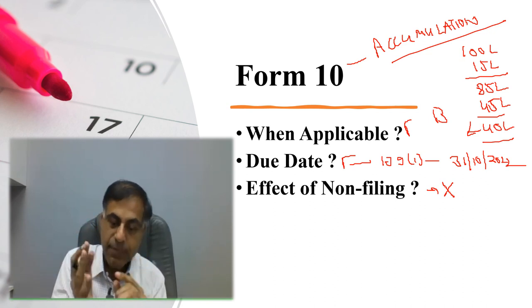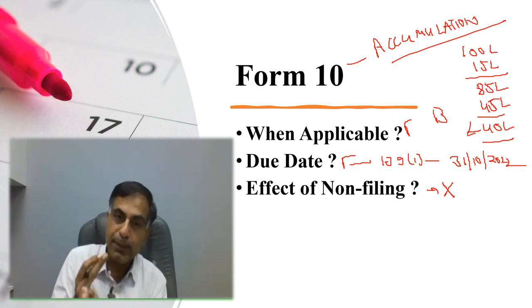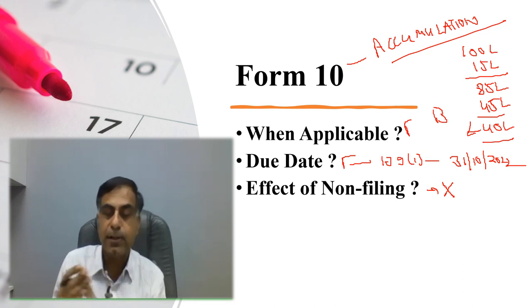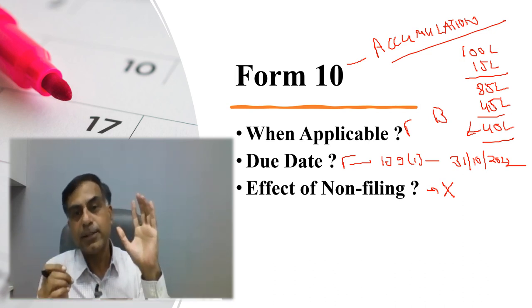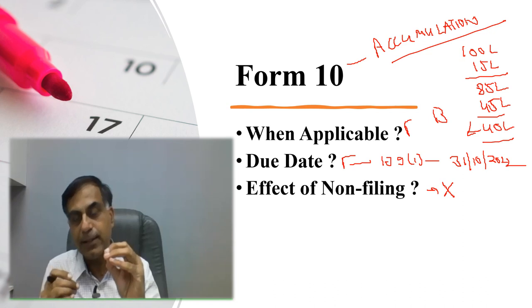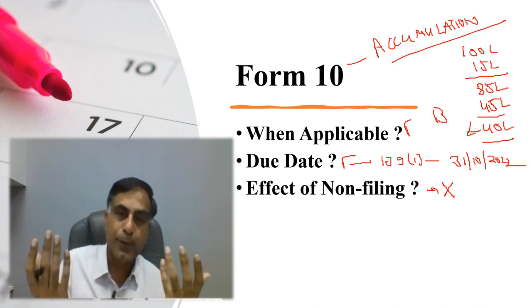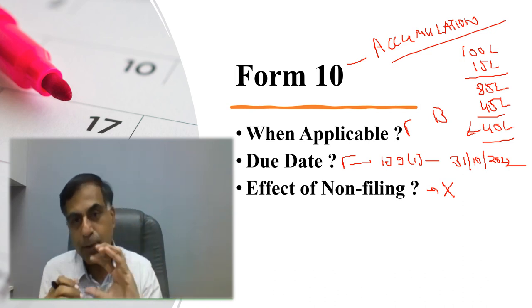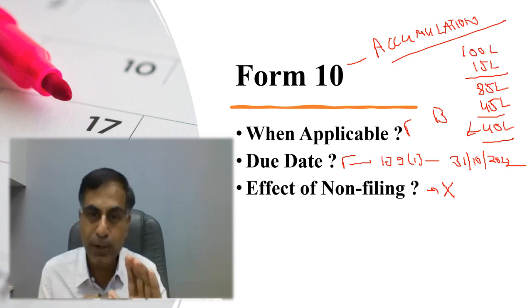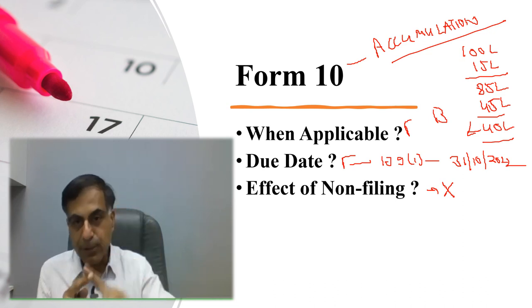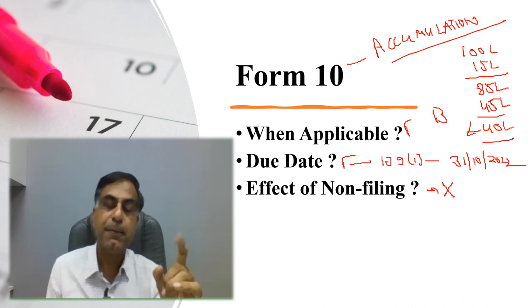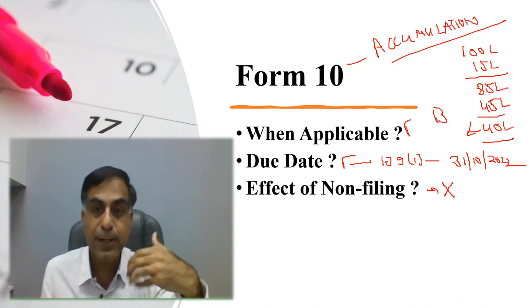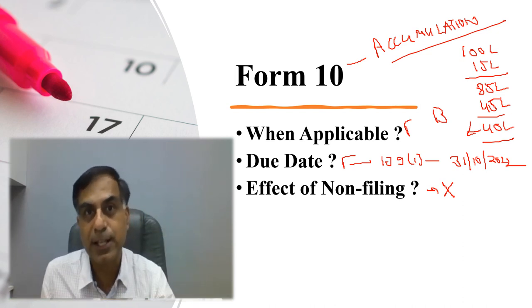So filing such form online is very important. I must repeat, may it be form 10B, may it be form 9A or may it be form 10, all must be filed online. So if you are not filing them online, again there is no benefit of merely thinking as if I am going to avail this claim. You have to ensure that your form 9A or your form 10 is duly uploaded online for claiming the benefit of deemed application or accumulation as the case may be. And form 10B is a must. Without that you will not be entitled to claim the benefit of section 11 and 12 at all.